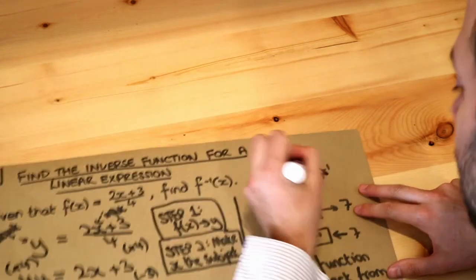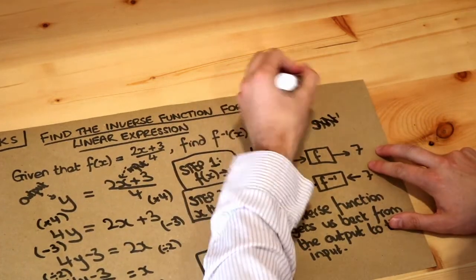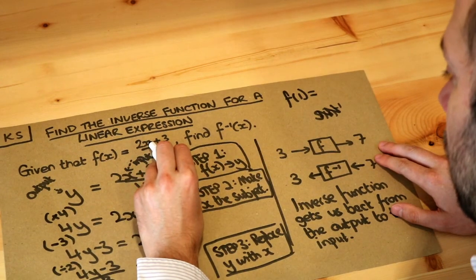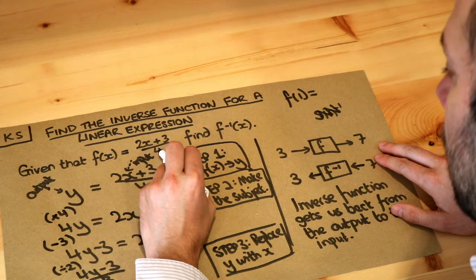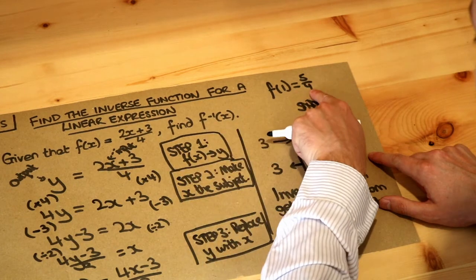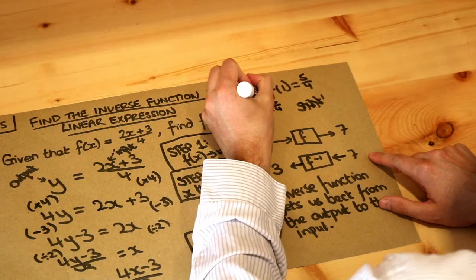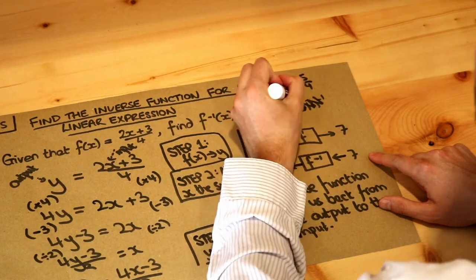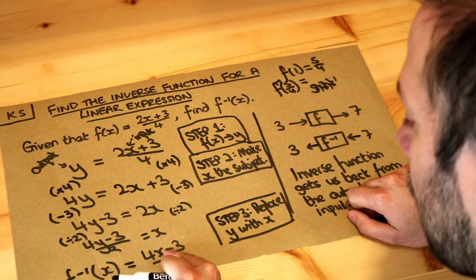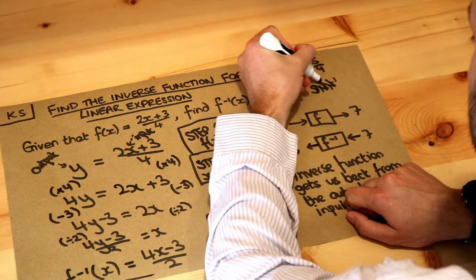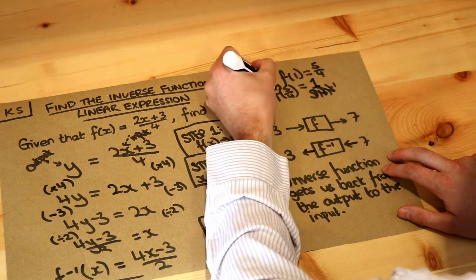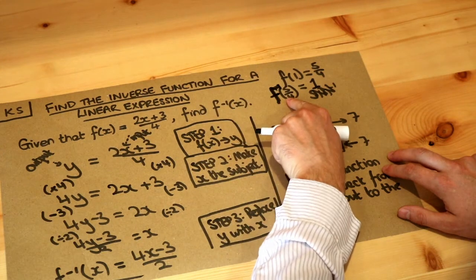Now we could check that this works. For example, if we did f of 1, that would be 2 times 1, which is 2, plus 3, which is 5, divided by 4 — so we get 5 over 4. We need to check that if we did the inverse function f minus 1 of 5 over 4, it would get us back to 1. So if we do f minus 1 of 5 over 4: 5 over 4 times 4 is 5, minus 3 is 2, divided by 2 is 1. And indeed we do get 1. So doing the original function gets us from 1 to 5 over 4, and doing the inverse function f minus 1 of 5 over 4 gets us back to 1. It works!